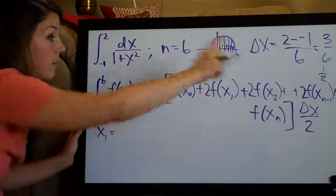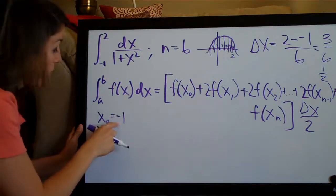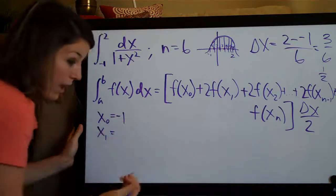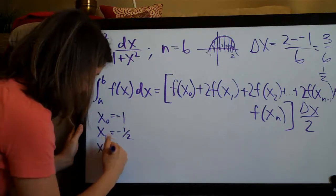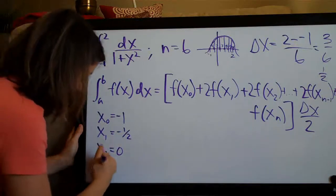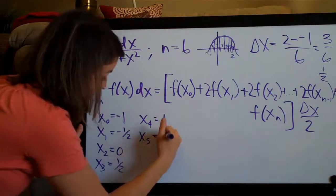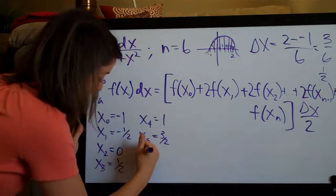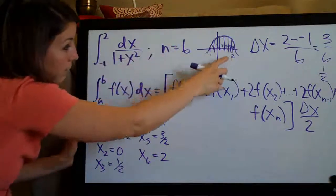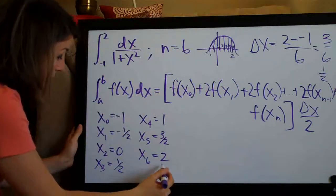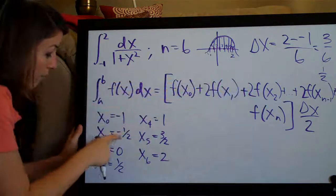x1, since delta x or the change in x is 1 half, we add 1 half to the previous number each time. So this will actually be 1 half or negative 1 plus 1 half is negative 1 half. And then x2 would be 0, we add 1 half again. x3 would be 1 half. x4 would be 1. x5 would be 1 half and x6 would be 2. We've gotten to 2, which is our upper limit here and the last number here. So we know that we've found all the values of x. This is our range, right? Negative 1 to 2. And we have a change of delta x of 1 half each time.